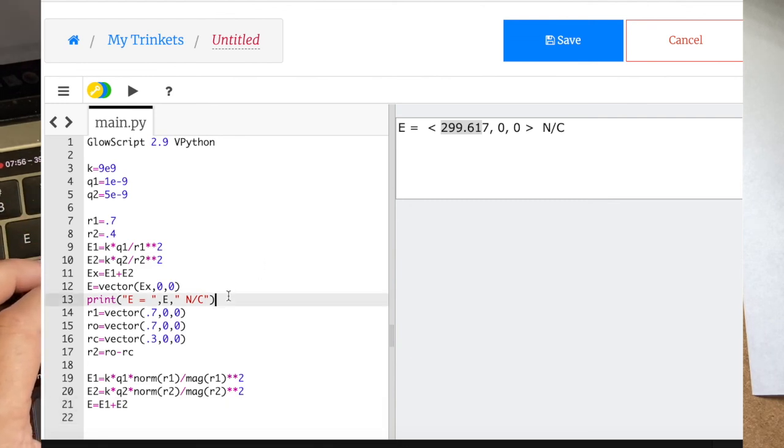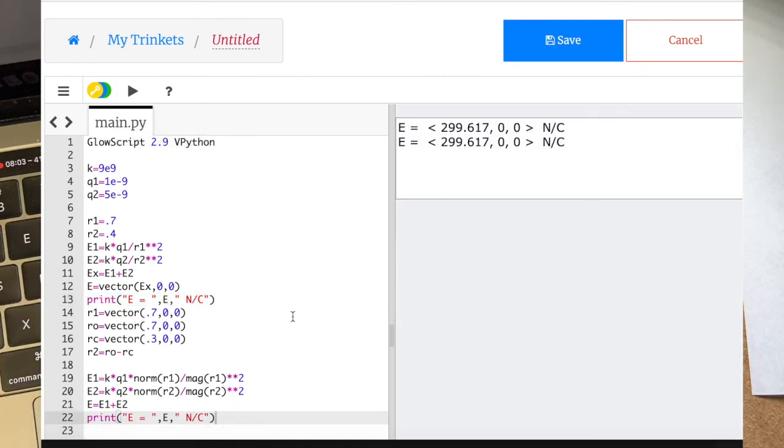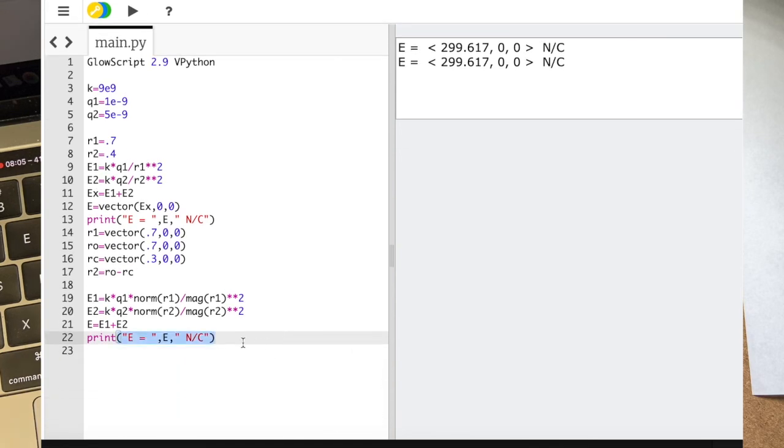E equals E1 plus E2. And then I'm just going to print the same thing. And let's run it. Same thing. Okay. Now the nice thing about this second way is that, like I said, if they're not easy numbers, if they're not right on the X axis, it's easier to deal with. But it's still the same idea. So there you go. That's the solution to that problem. Hope you enjoyed it.